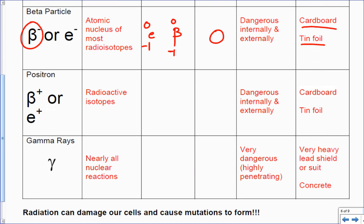Notice the positron has the plus sign. It comes from radioactive isotopes. Positrons got the e with a 0 and a plus 1, or it's got that β with the tail with a plus 1 and a 0. Notice that's the plus 1 and the minus 1, that's different. Sometimes we'll see its symbol is just that little β with the plus. Its mass again is zero. It's dangerous internally and externally. Cardboard and tin foil can stop it because a positron is basically just like a beta particle except it's positive.